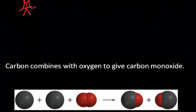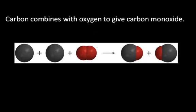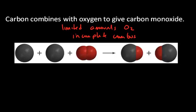Here's another example. Sometimes when carbon combines with oxygen it gives carbon monoxide. This happens when we have limited amounts of oxygen present. It just happens sometimes. This is called incomplete combustion. Whereas the previous example was complete combustion when a fuel burns in oxygen to give carbon dioxide.